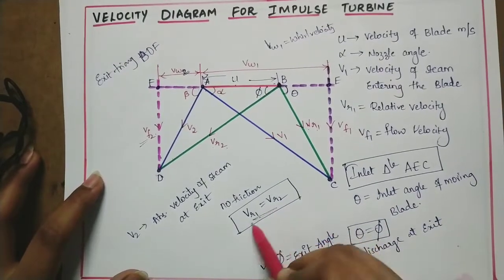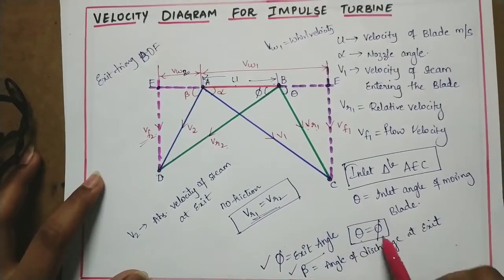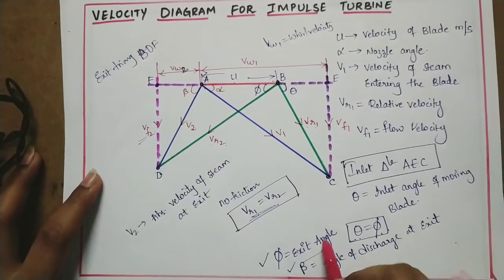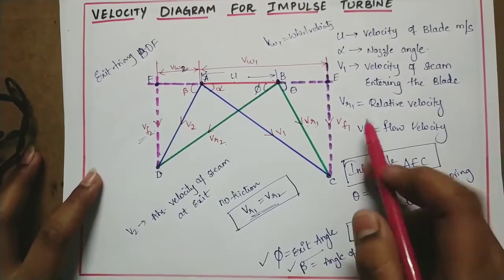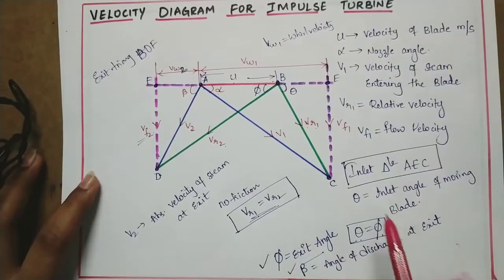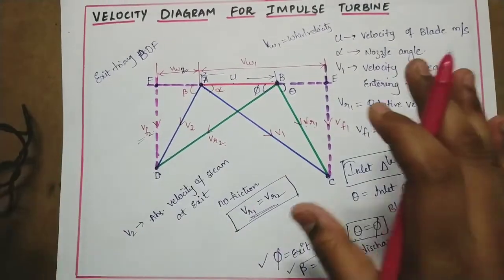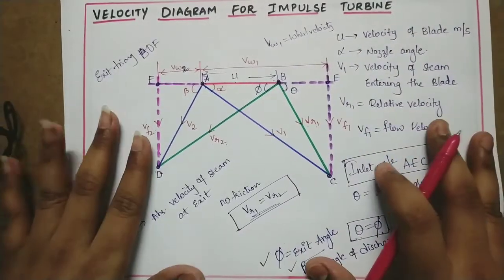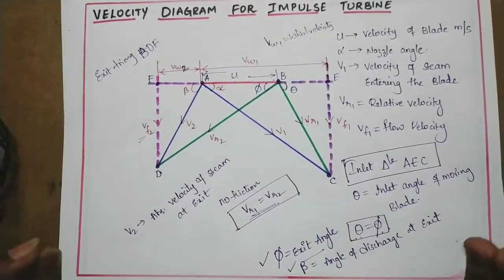This point to D point join to get V2, the absolute velocity of steam at exit. Draw vertical and horizontal components to get flow velocity Vf2 and wheel velocity Vw2. This is how you draw the velocity diagram for an impulse turbine.